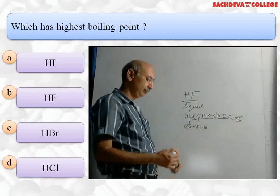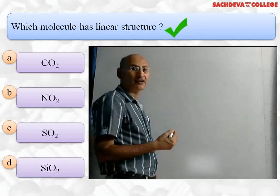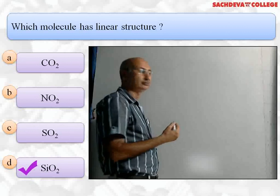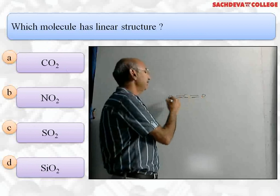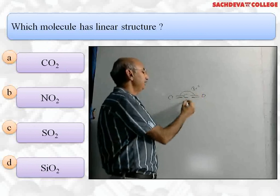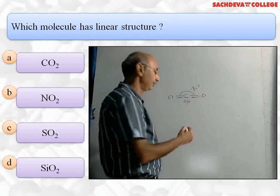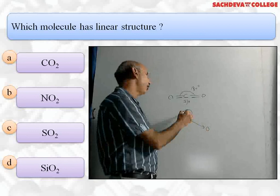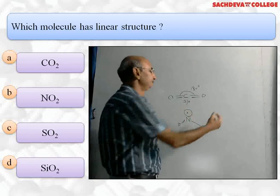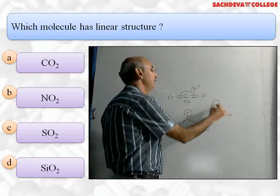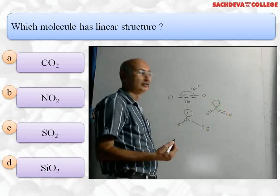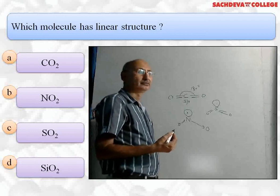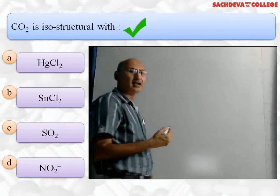Next question: which of the following molecules has a linear structure — (a) CO₂, (b) NO₂, (c) SO₂, or (d) SiO₂? The correct answer is (a) CO₂, which is a linear molecule with a bond angle of 180° due to sp hybridization with double bonds on both sides. NO₂ is a bent molecule with one double bond, one coordinate bond, and one odd electron. SO₂ is also bent due to a lone pair. SiO₂ is a three-dimensional covalent solid.